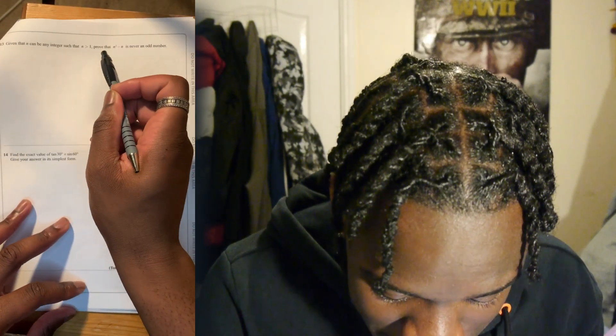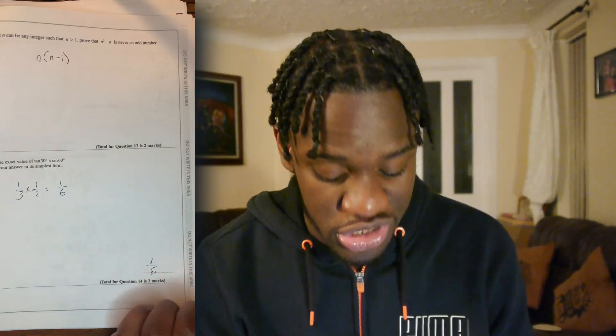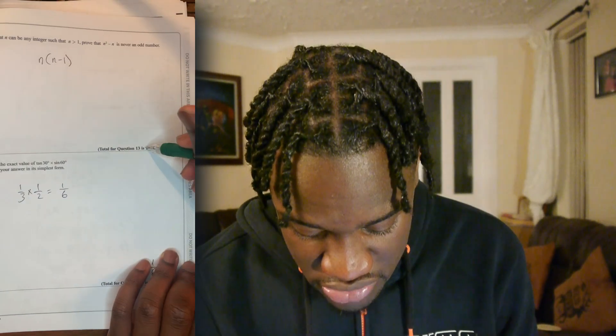You know what the issue is? When you haven't done something in so many years, this just seems so foreign. What do you mean N over 1 proves that N squared minus N is an odd number? If N is even, N minus 1 — I'll have to miss out on those two marks, I don't need them. They're useless anyway.